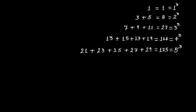Three cubed equals 27, and this is expressed as seven plus nine plus eleven. Seven, nine, and eleven are all odd numbers. So 27 is expressed as the addition of three consecutive odd numbers — and here we have the number three, so we use three consecutive odd numbers.